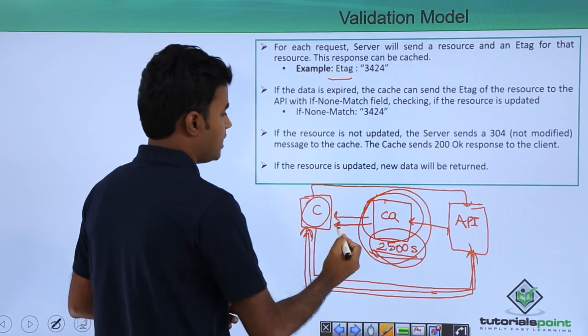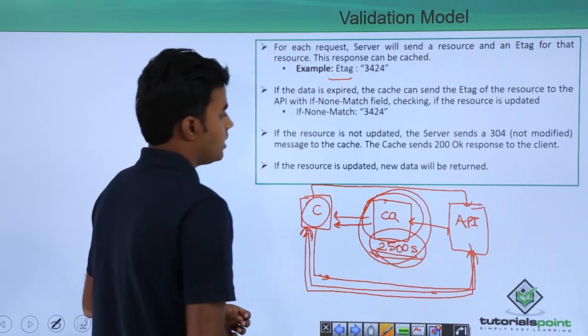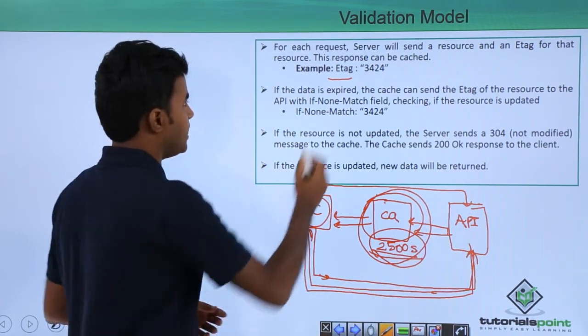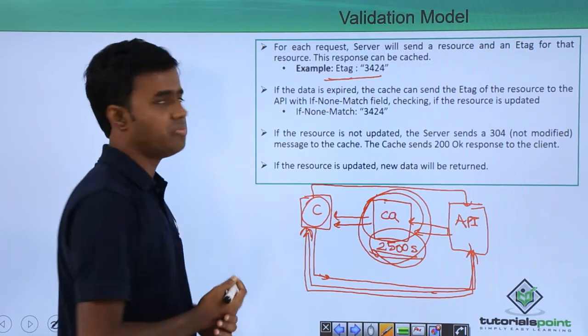For example, at the first request, the server will send the response and along with the response, it will send an e-tag header. For example, 3424.